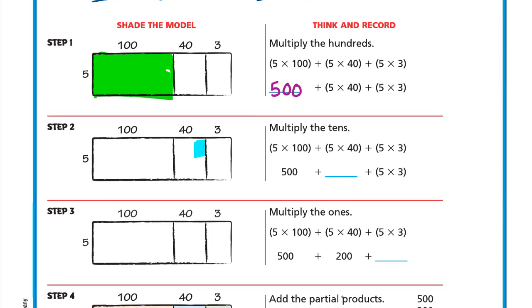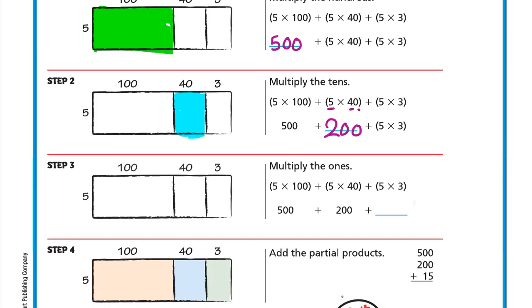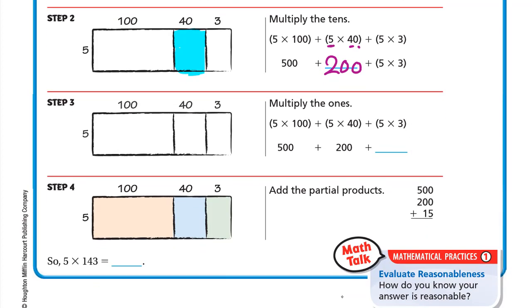Now 5 times 40: we multiply 5 by 4, which is 20, then we write the zero, so it's 200. Then 5 times 3.